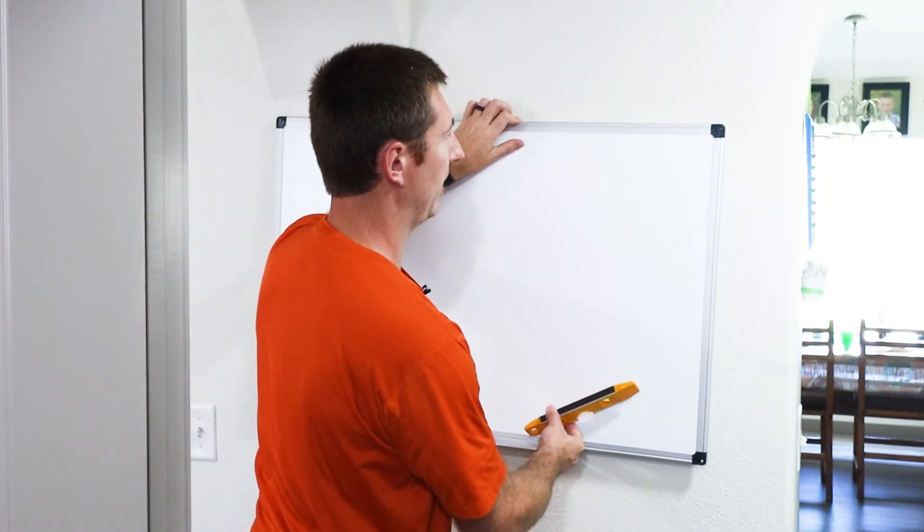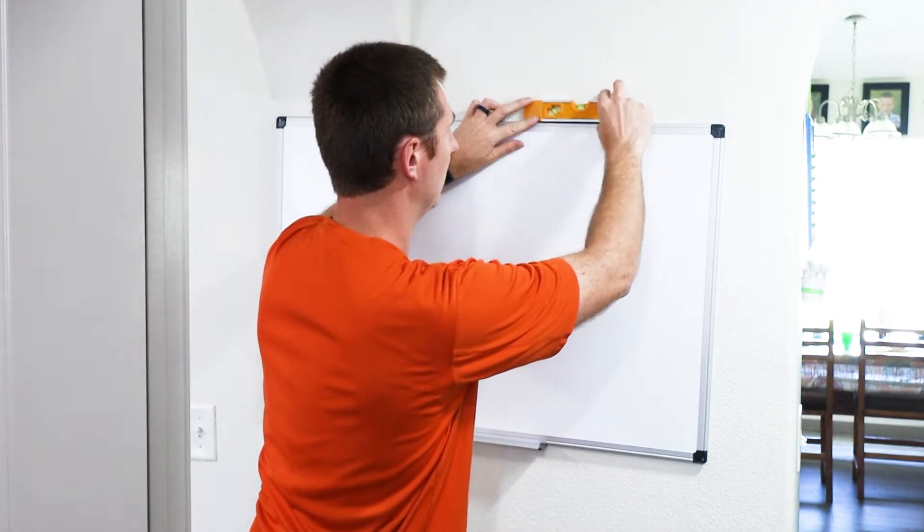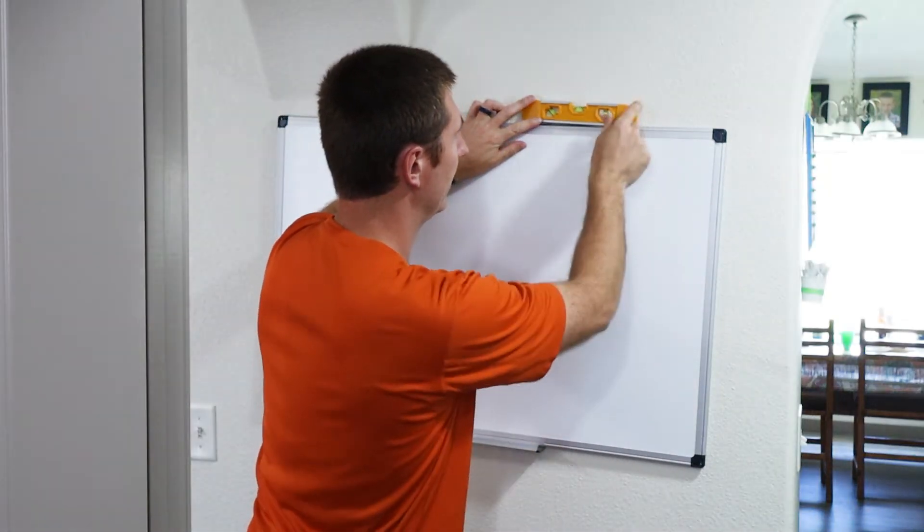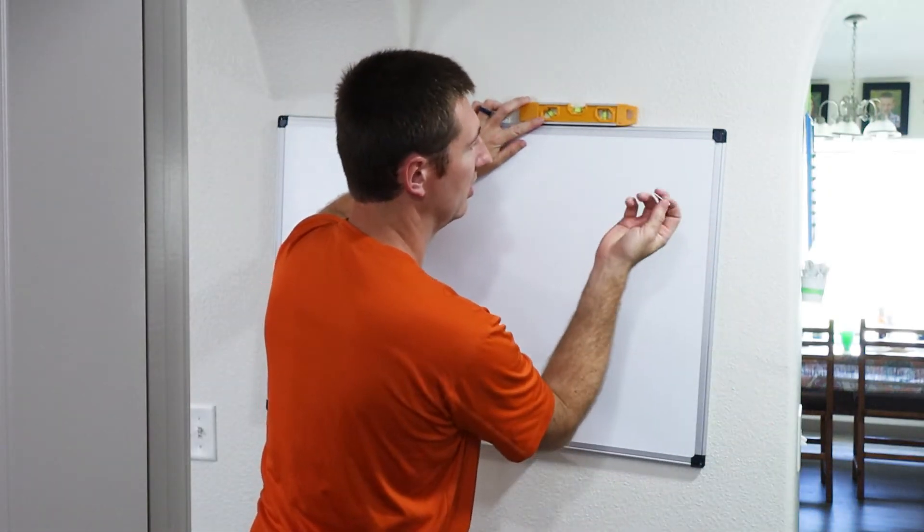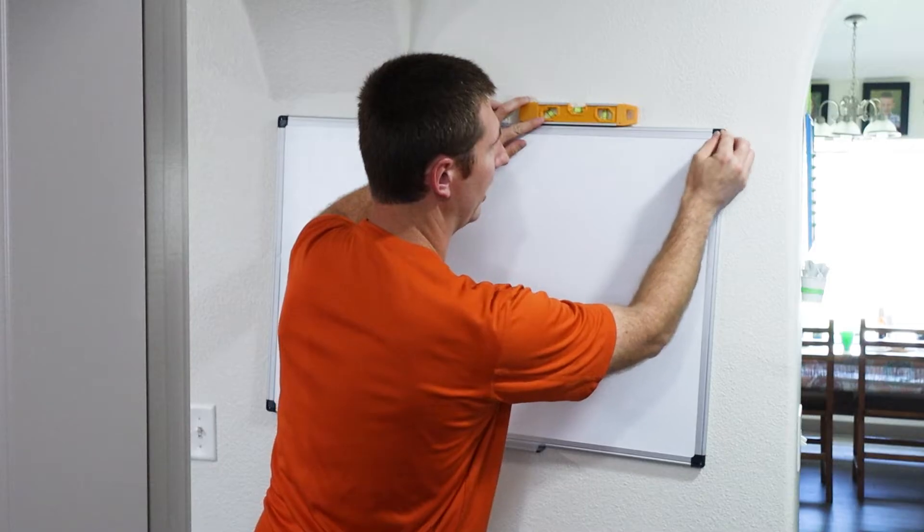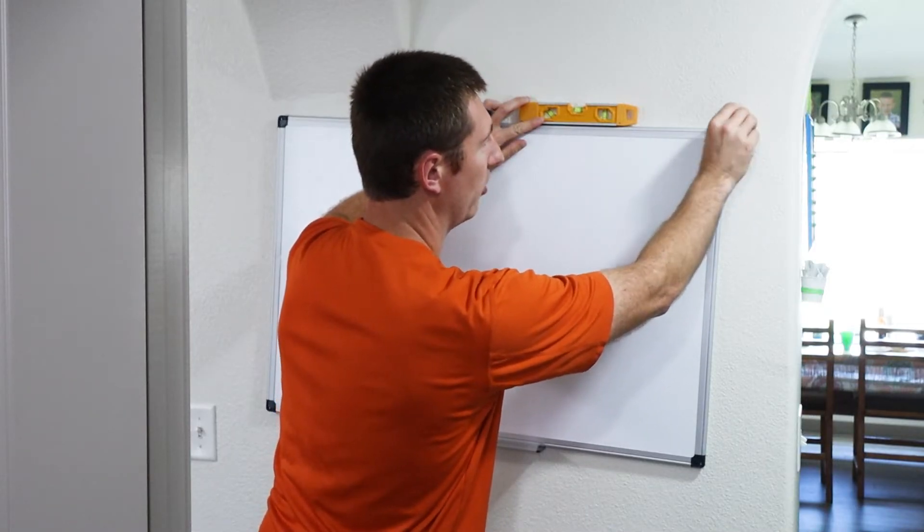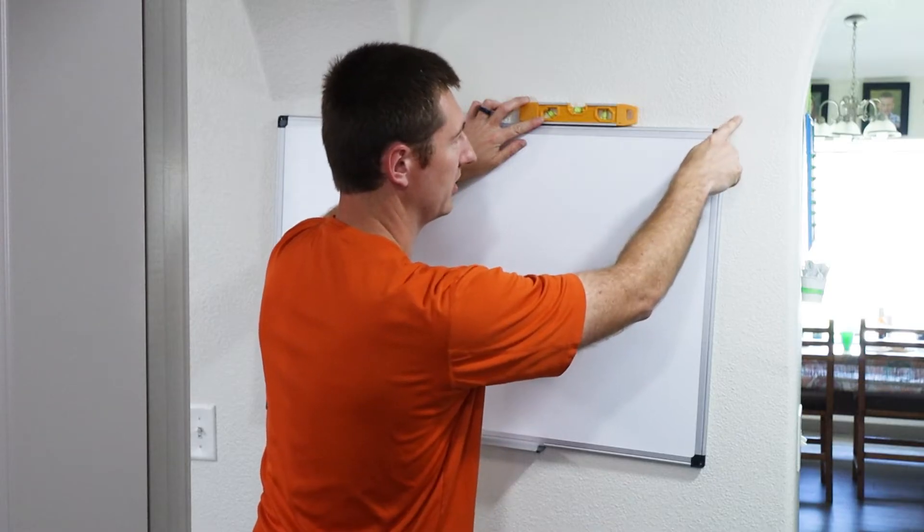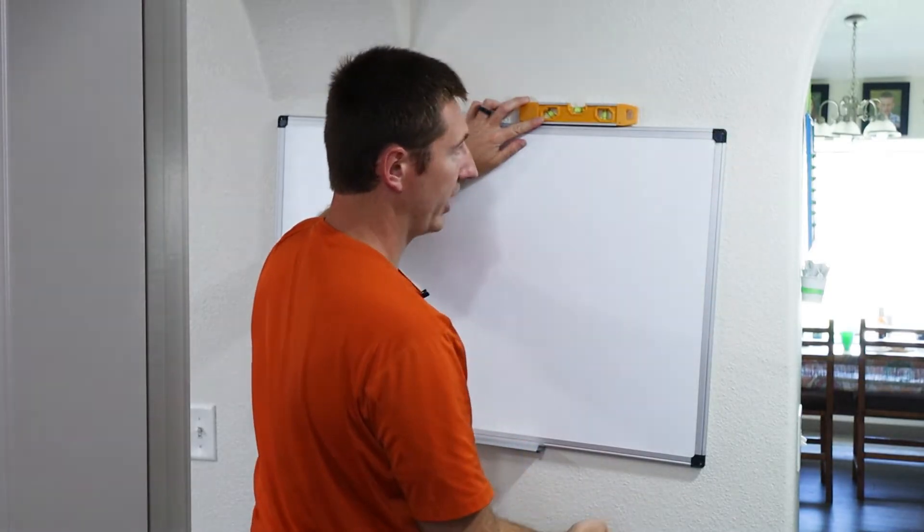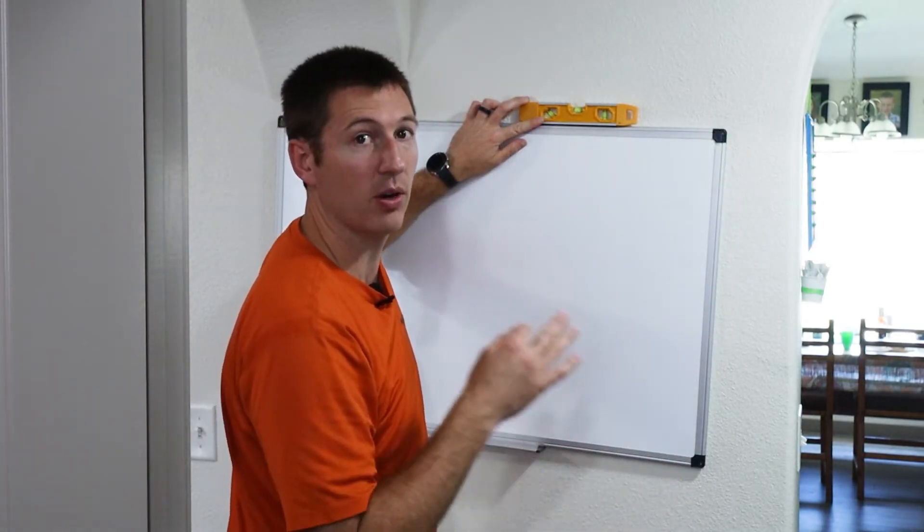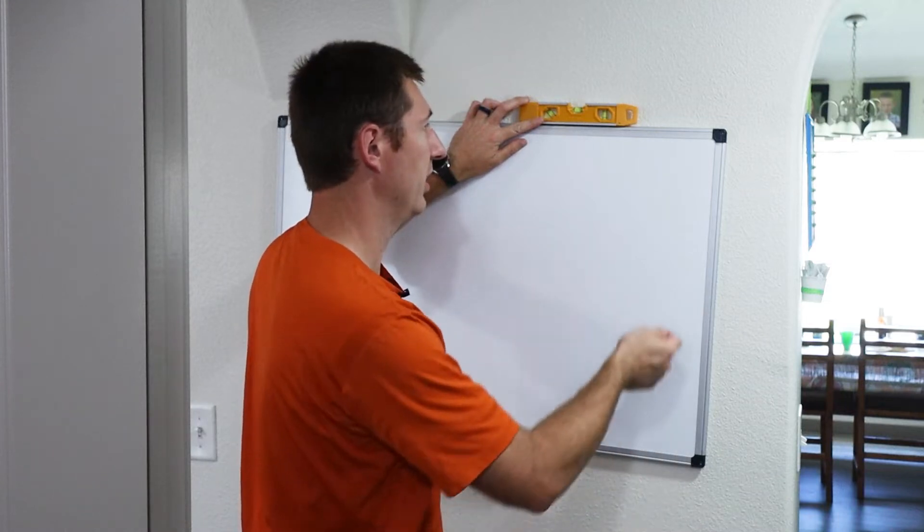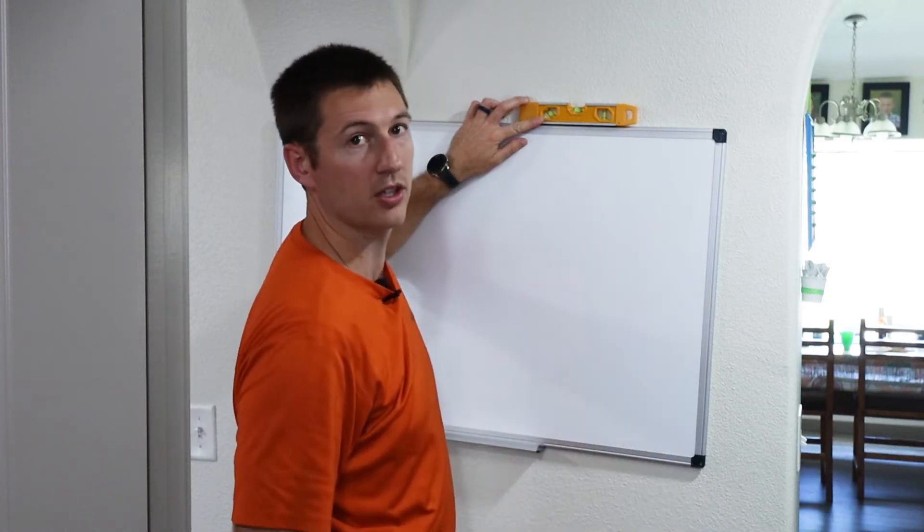What I previously already did was I had a level that I set up here to check level and then I took a screw and put it where I wanted and just pushed and made an indent right here. I made an indent in the wall so now I know where this piece is going to go and then I also checked with the stud finder to see if I'm going into a stud or not. Fortunately all four of mine are going into studs.